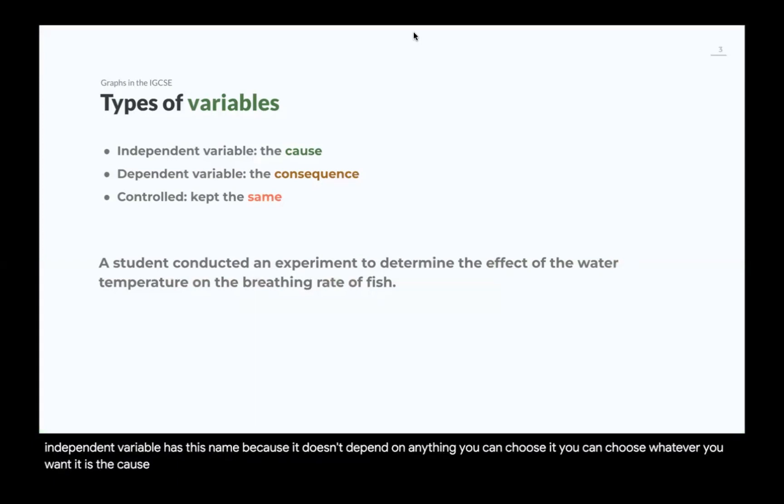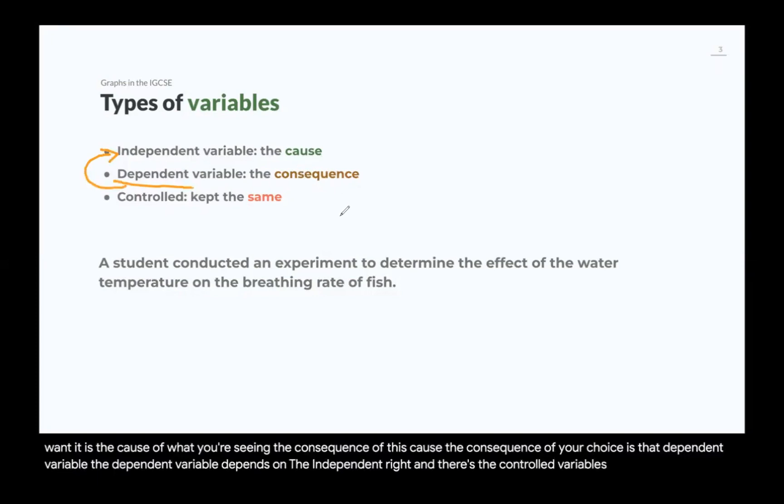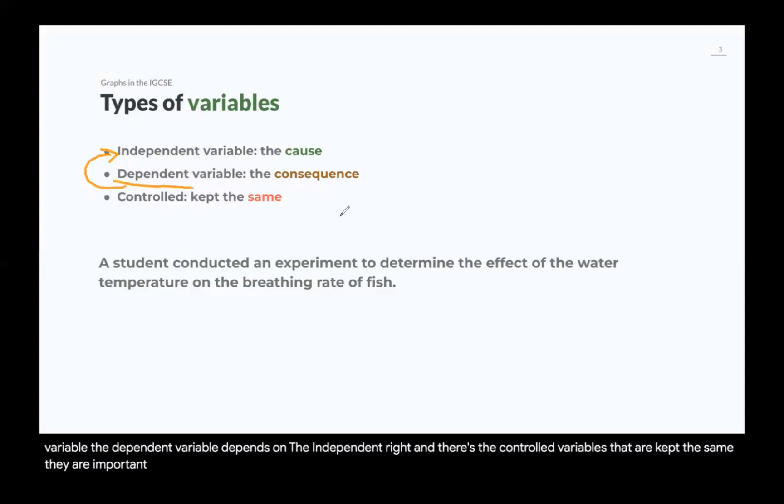It is the cause of what you're seeing, the consequence of this cause, the consequence of your choice is the dependent variable. The dependent variable depends on the independent, right? And there's the controlled variables that are kept the same. They are important for the experiment design question for six marks, but not so much for the graphs question.